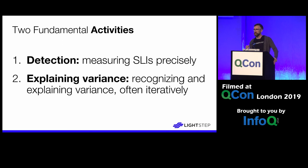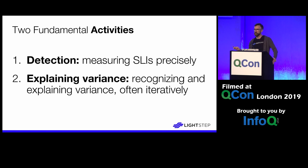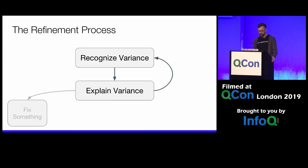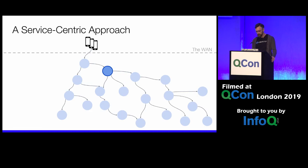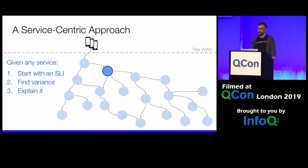There are basically two activities: detecting SLIs with a lot of precision, and explaining when they vary. The detection piece is more than just measuring P99 — ideally you get very precise about the SLI so you can pick it apart and understand its components. The variance can be in time or across the latency distribution, and it's usually an iterative process. It's rare that you can look at an SLI and immediately get to the heart of what's going on. Given any service, we have to start with an SLI, find variance, and then explain that variance. That's what service-centric observability should be about.